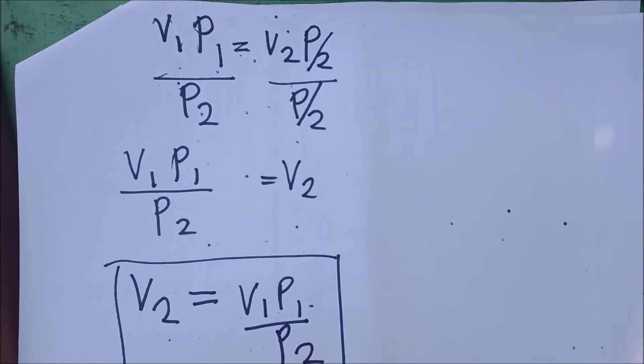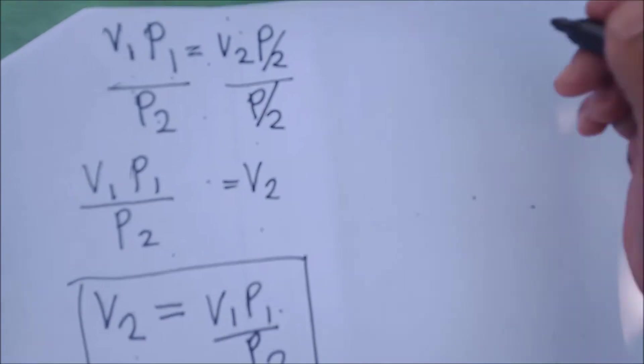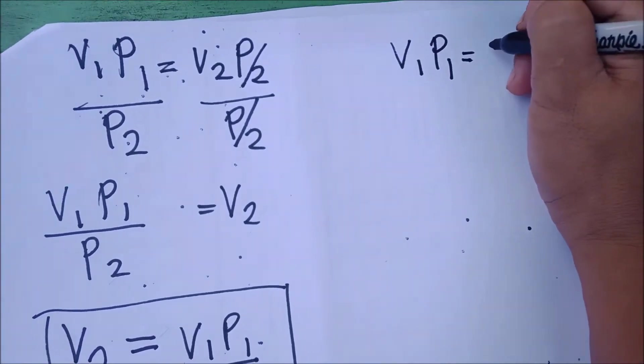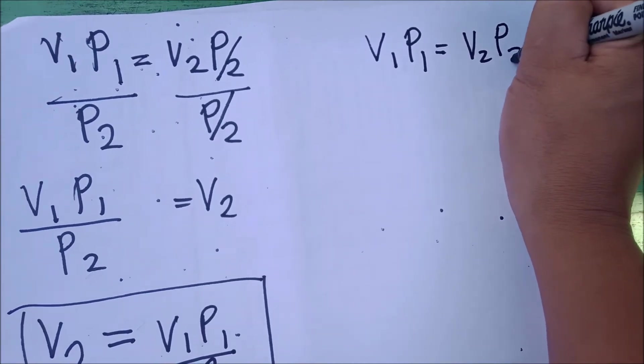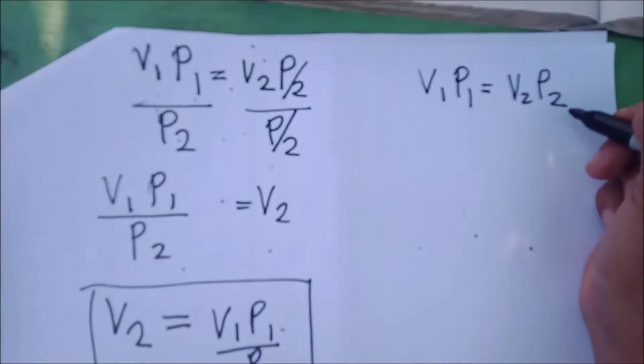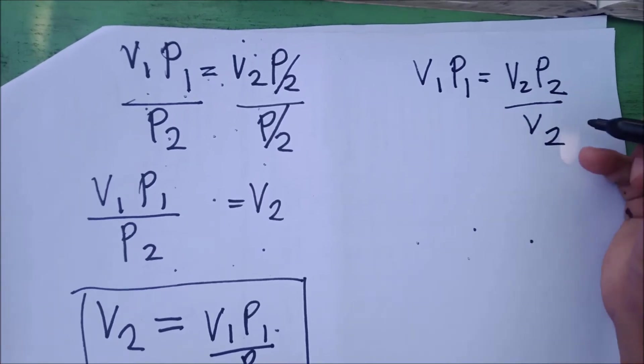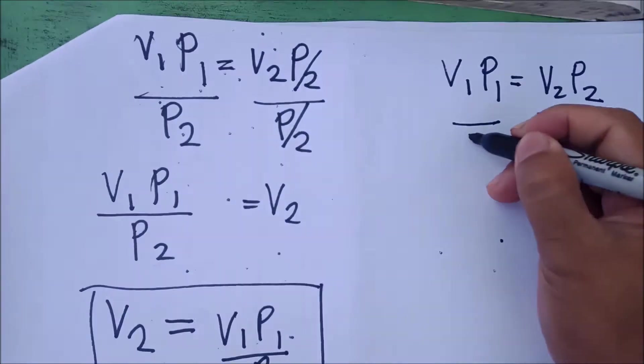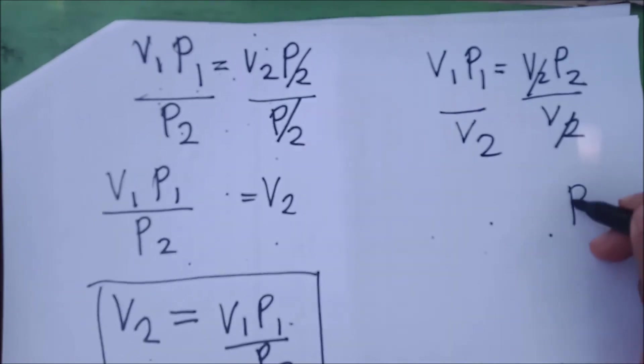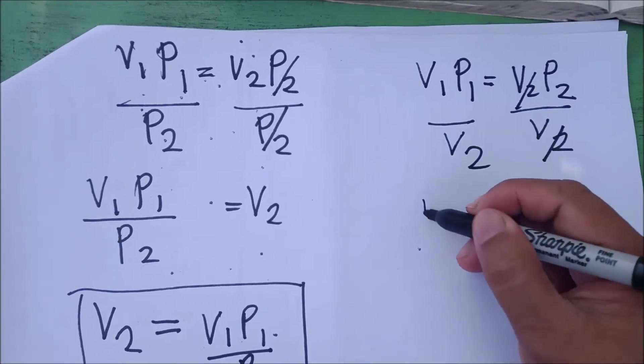If you're looking for P2, write again the Boyle's Law. This time, since we're looking for the formula for P2, we eliminate V2 on this side. This will be cancelled out.